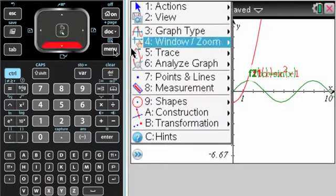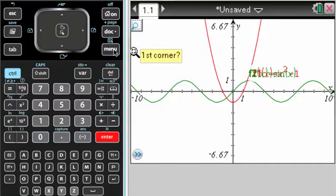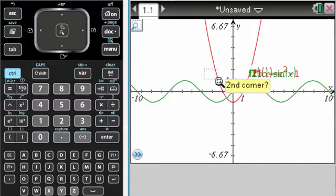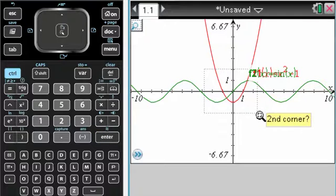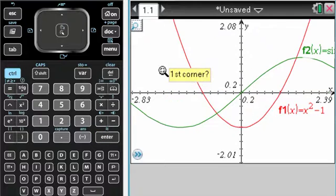First what I'm going to do is zoom and then box. When you zoom box, I always go top left corner to bottom right corner, let go, and it zooms in for you.